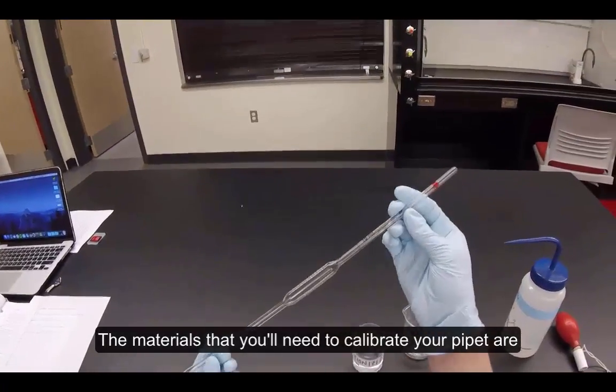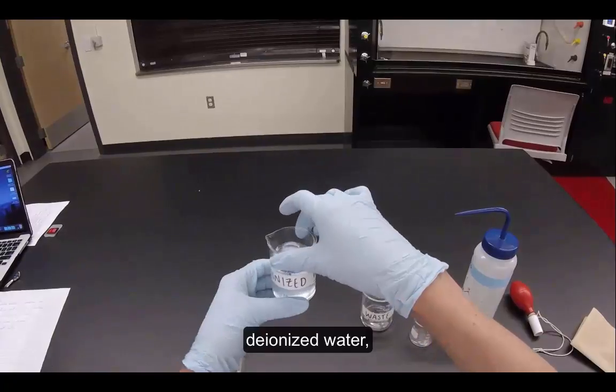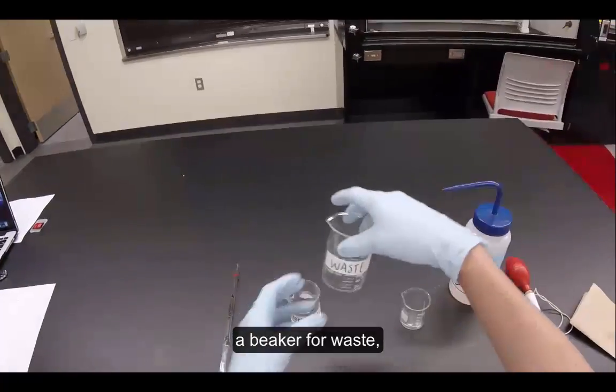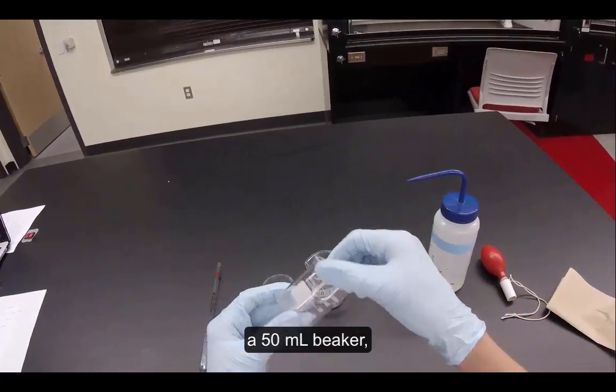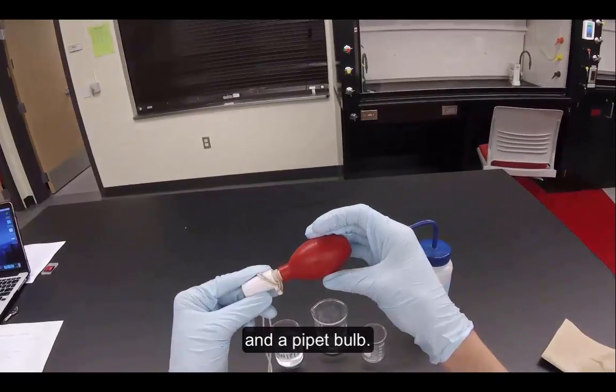The materials that you'll need to calibrate your pipette are your pipette, deionized water, a beaker for waste, a 50 milliliter beaker, deionized water in a spray bottle, and a pipette bulb.